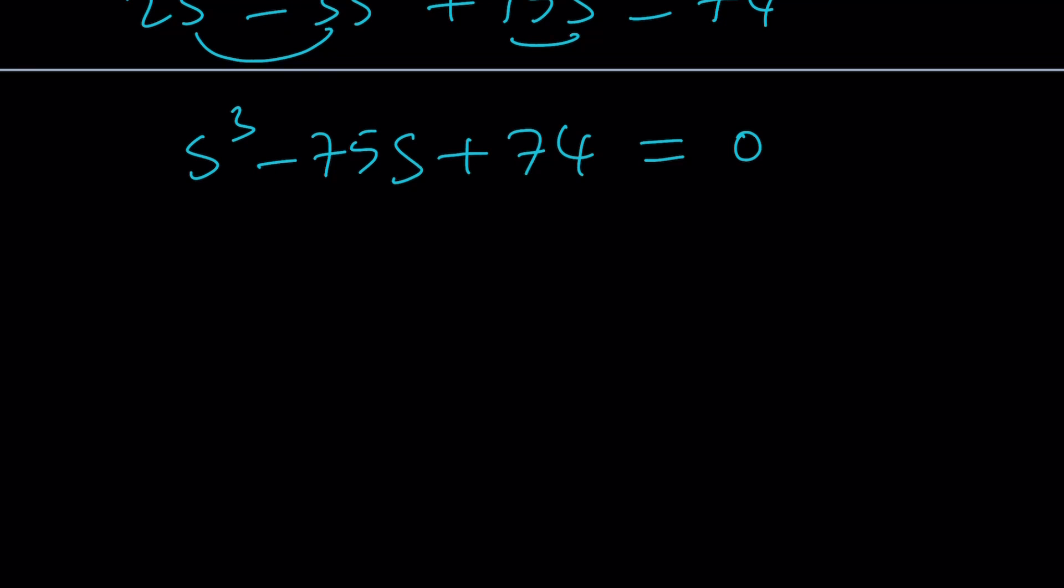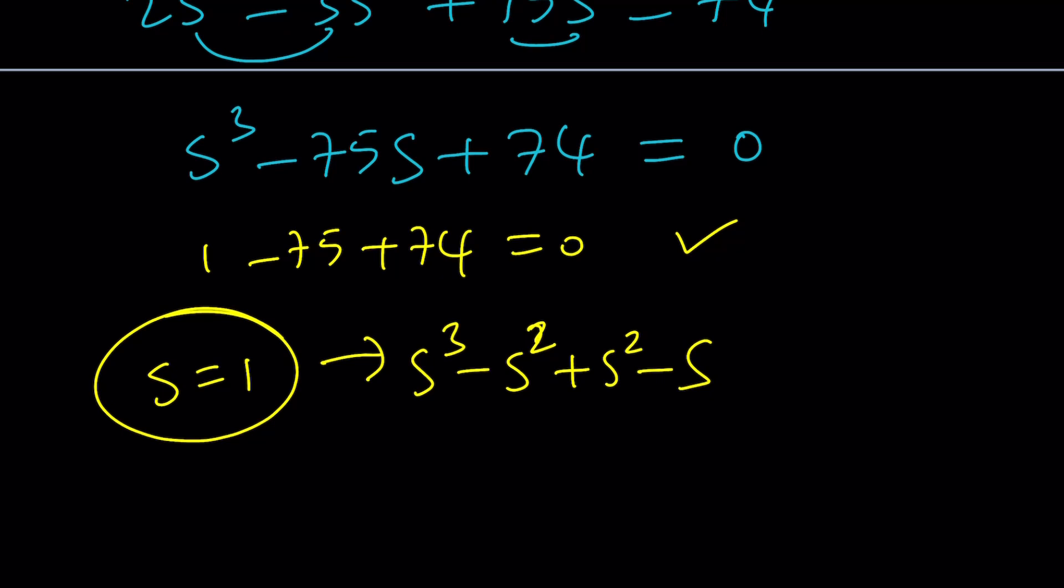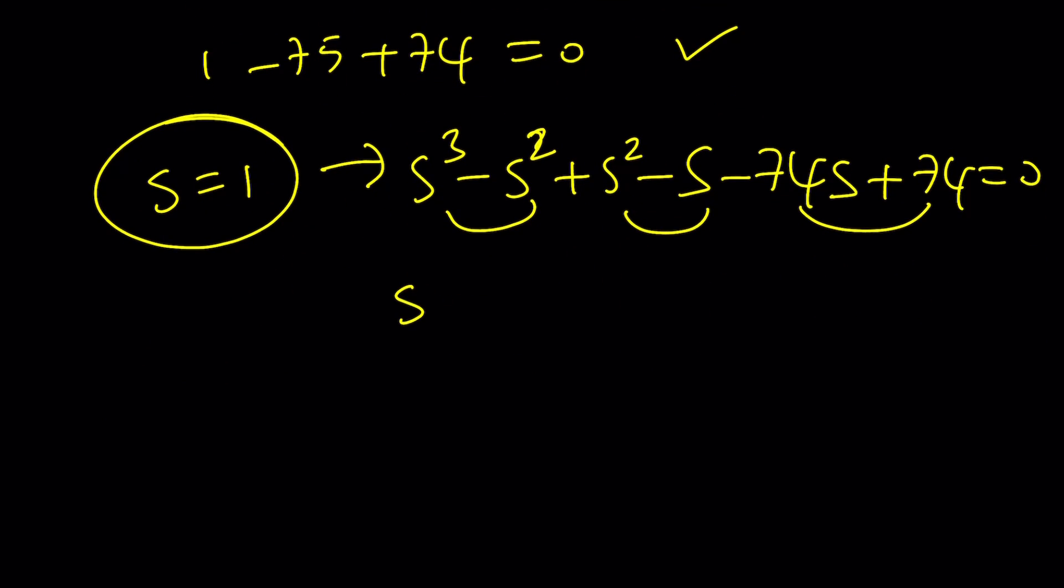What am I going to do with this? One of the things that I've been telling you all the time. If you have a polynomial equation, check the sum of coefficients: 1 minus 75 plus 74 equals what? 0. So that means s equals 1 is a solution. And then by using this information, we can go ahead and factor it. But s equals 1 is going to work for sure. If s is equal to 1, then I can write it as s cubed minus s squared plus s squared minus s minus 74s plus 74 equals 0. And this is factorable by grouping.